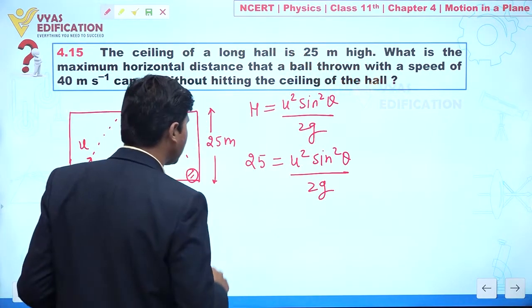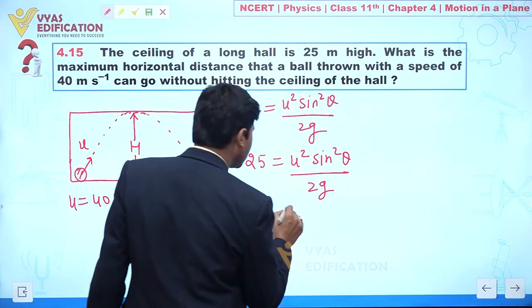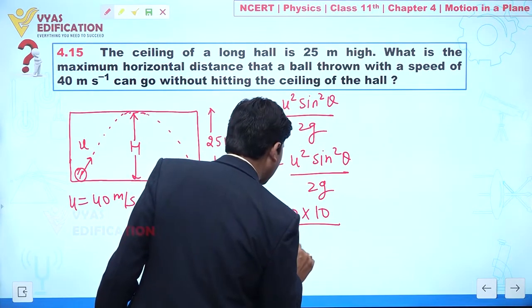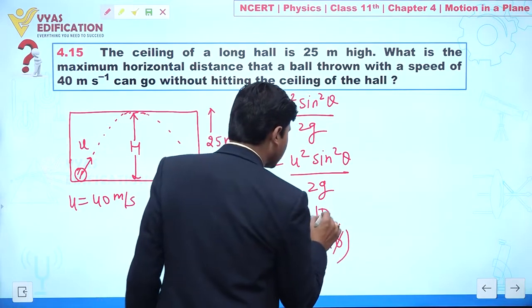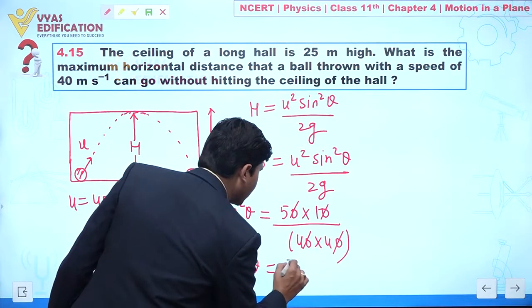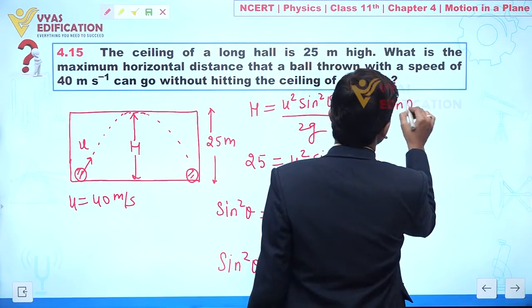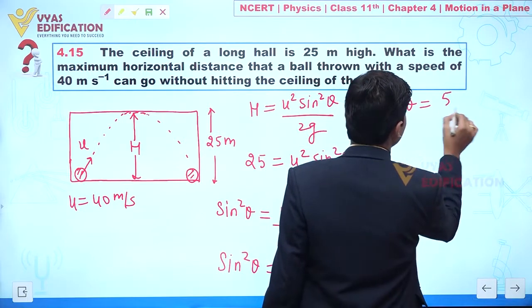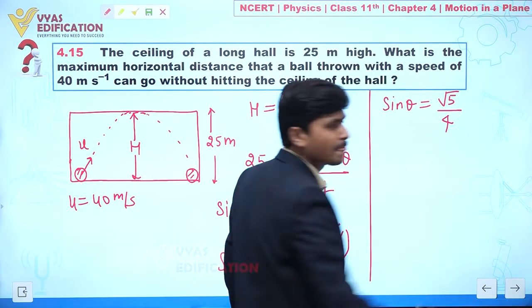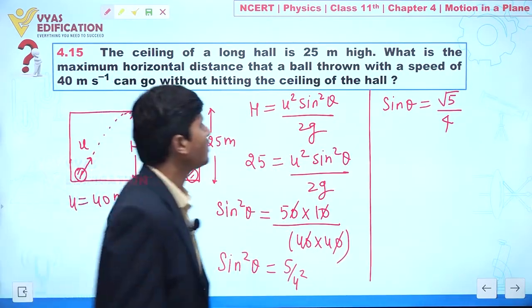Now we can write: sin θ = √(5/4). We can also write this as under root of 5 divided by 4. So the value of sin θ is under root of 5 divided by 4.